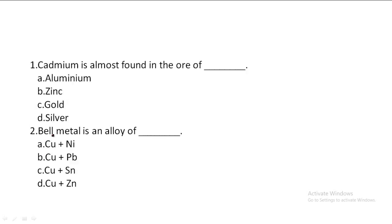First one: Cadmium is almost found in the ore of — Option A: Aluminium, Option B: Zinc, Option C: Gold, Option D: Silver. So, Cadmium is almost found in the ore of Zinc. Cadmium is the ore of Zinc.